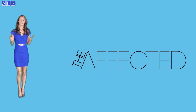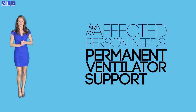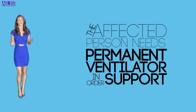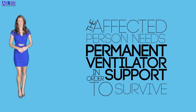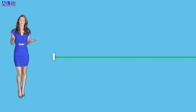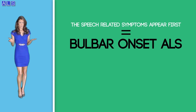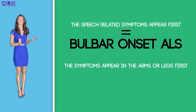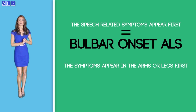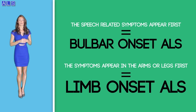As the condition develops further, the muscles get weaker, affecting all sorts of functions such as breathing, swallowing, and chewing. In the advanced stages, shortness of breath and difficulty breathing and swallowing are also observed. When muscles of the respiratory system are affected, the person needs permanent ventilator support in order to survive. When speech-related symptoms appear first, it is called bulbar onset ALS. If the symptoms first appear in the arms or legs, it is known as limb onset ALS.